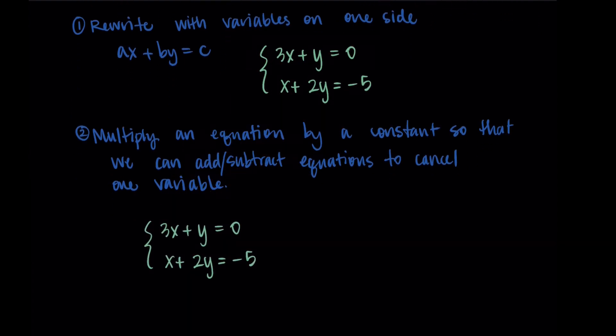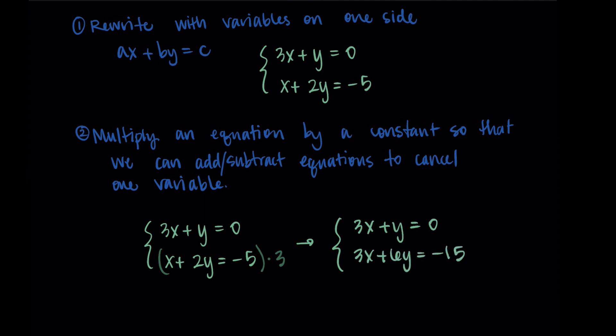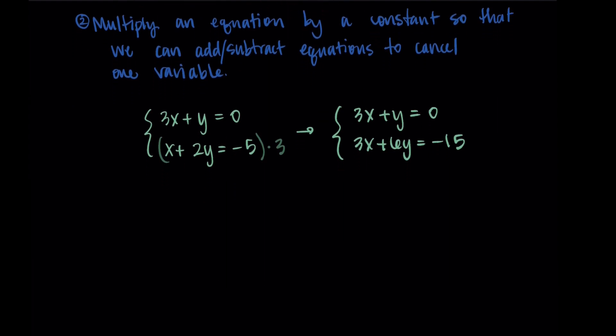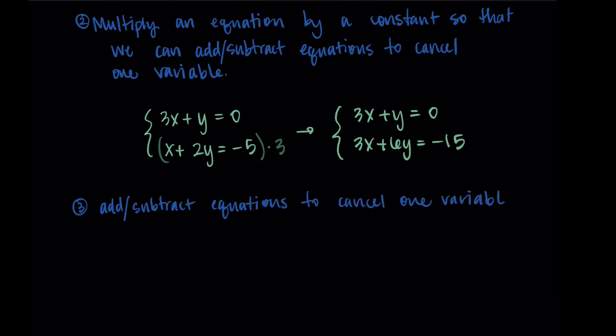Next, we multiply an equation by a constant so we can add or subtract to cancel a variable. Since the first equation has 3x, it would be great to have 3x in the second equation too — then we can subtract and the 3x's cancel. So I'll multiply both sides of the second equation by 3, which yields 3x plus 6y equals negative 15.